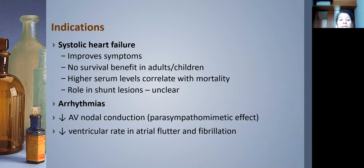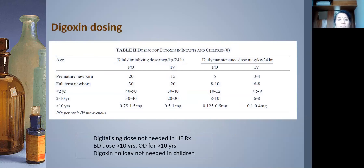In fact, high serum digoxin levels have correlated with increased mortality — so be careful. Its role in shunt lesions like large VSD with heart failure is unclear, but when someone is very symptomatic the systemic benefits justify use. In arrhythmias, it decreases AV nodal conduction and reduces flutter and fibrillation. For dosing: digitalizing doses are used mainly for arrhythmias. For heart failure, maintenance dosing is twice daily for under-10-year-olds and once daily for over-10-year-olds, with higher mg/kg doses in younger patients.